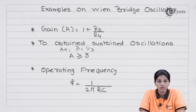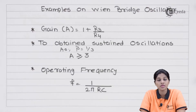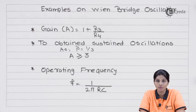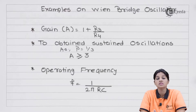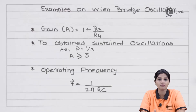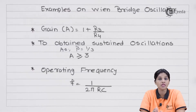Now let's see various examples based on the Wien bridge circuit. In the Wien bridge circuit, the frequency of oscillation depends upon the value of resistors and capacitors. The Wien bridge circuit consists of four arms. Arm AB has a series combination of resistor and capacitor. The second arm has a parallel combination of resistor and capacitor. The third and fourth arms consist of two resistors R3 and R4, which provide a reference voltage.